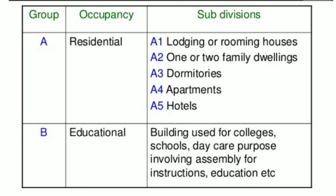Group B is Educational Buildings. These are buildings used for colleges, schools, day care purposes, involving assembly for instruction, education, and similar purposes.